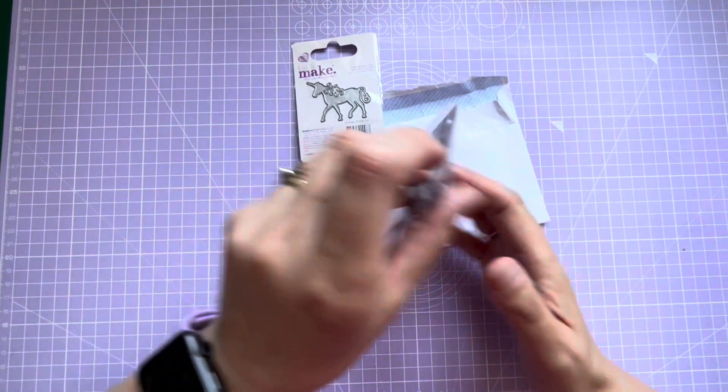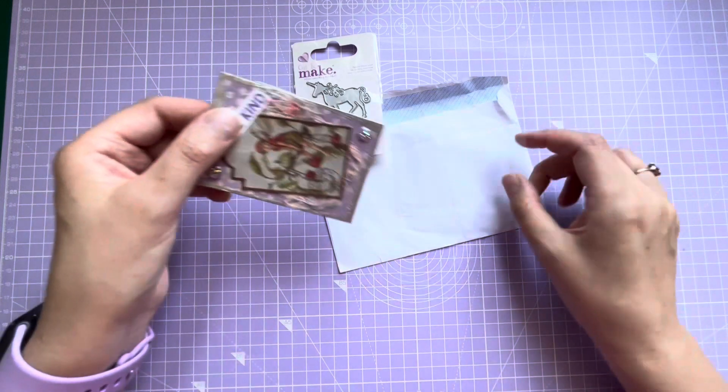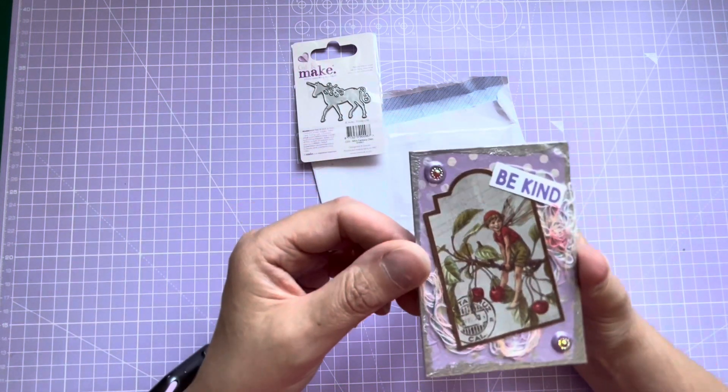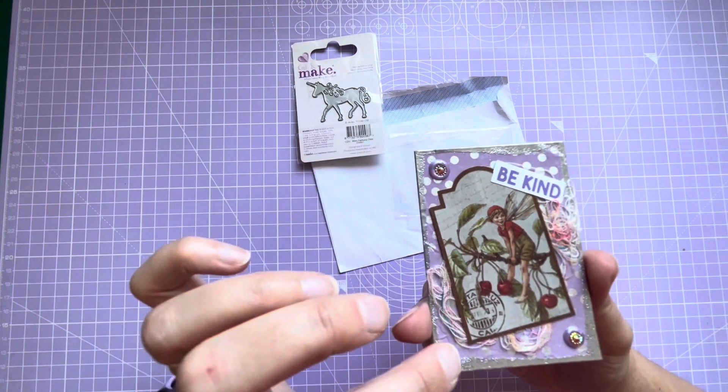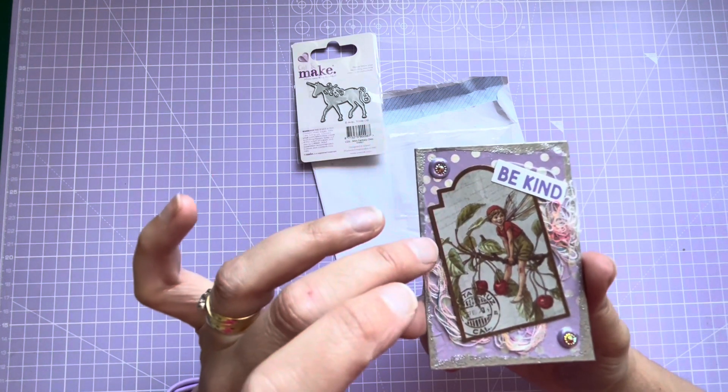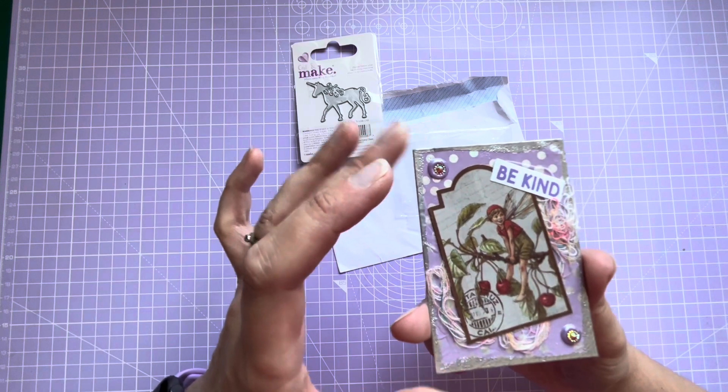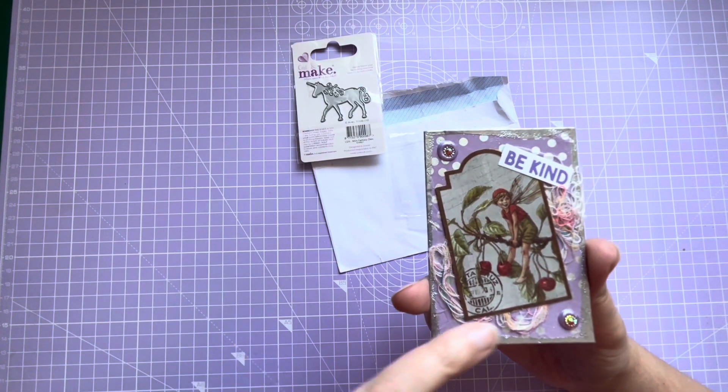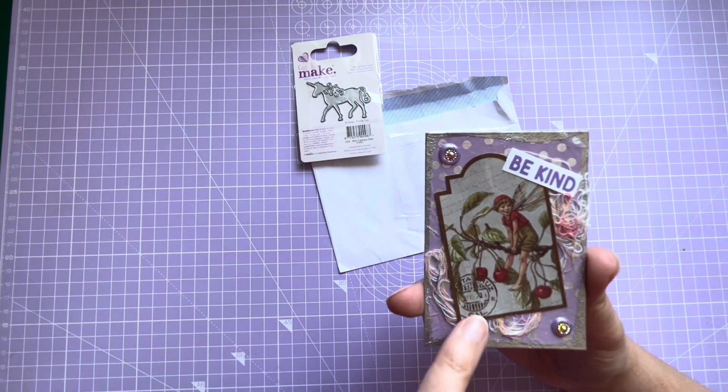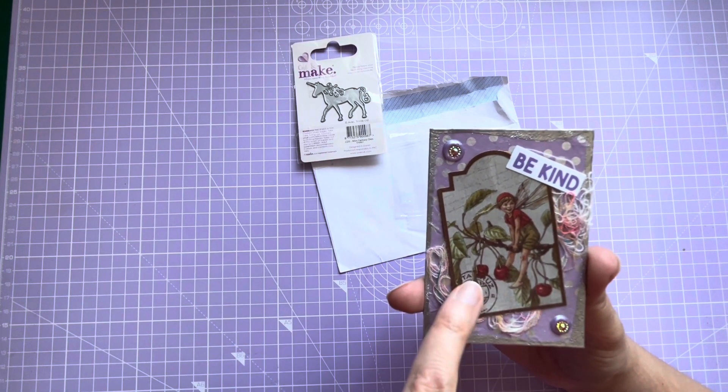And also a gorgeous ATC. She showed she had a collection of these that she'd made. I think the backing was some wrapping paper or packaging and then she's gone around that with some silver embossing powder. We've got a lovely image here of a little fairy on a cherry branch.